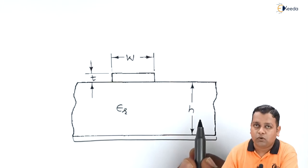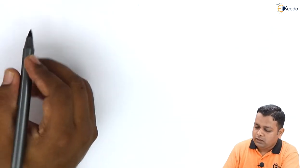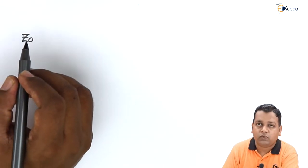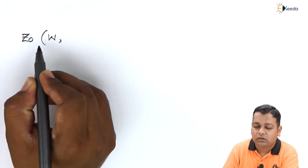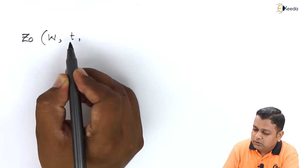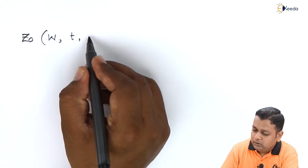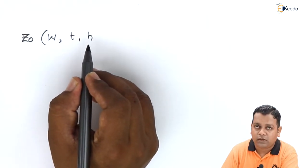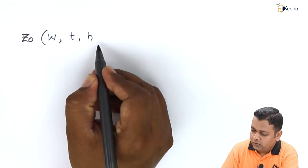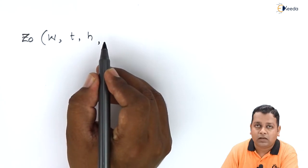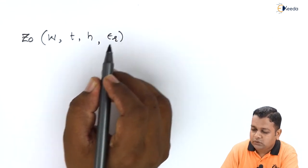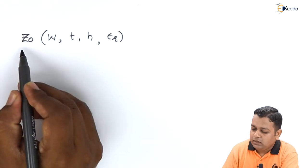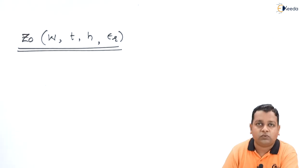The dielectric characteristics of the material are represented by the relative dielectric constant epsilon r. The dimension of the dielectric material separating the strip conductor from the ground plane at the bottom is represented by small h, sometimes also referred to as small b. The characteristic impedance Z zero is a function of the strip conductor width W, thickness t, separation h, and the relative dielectric constant epsilon r, making its determination quite complex.